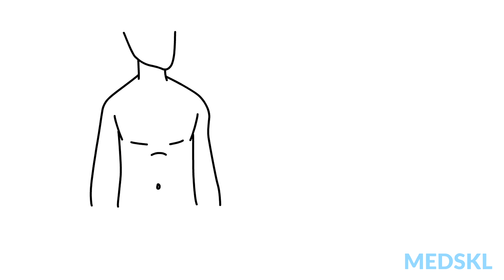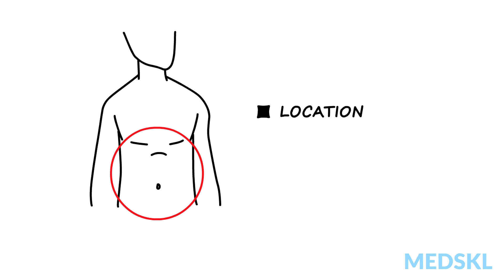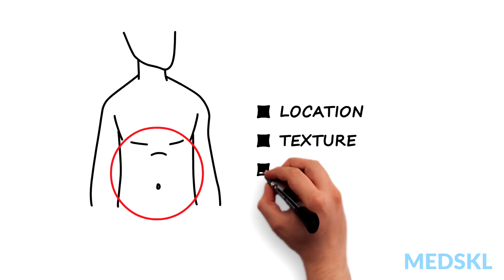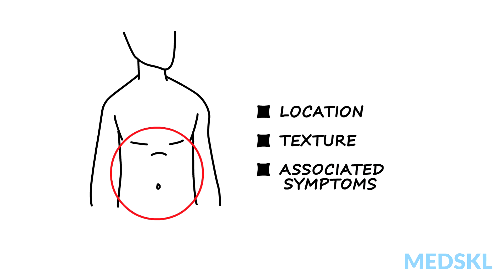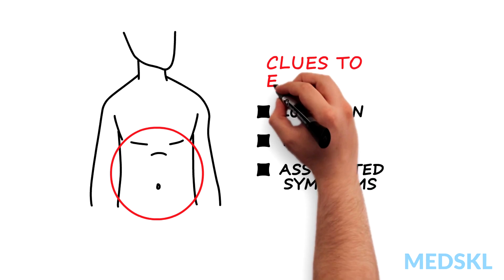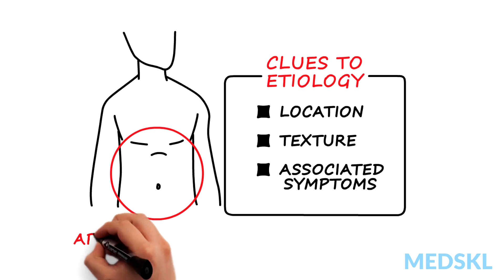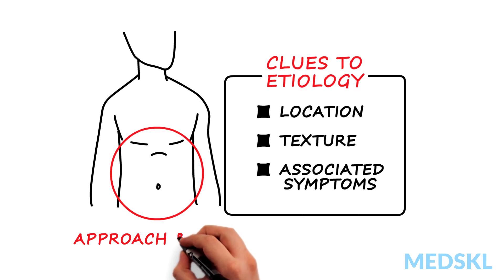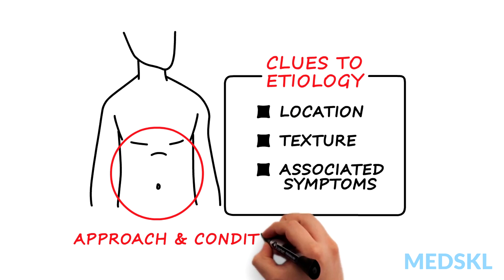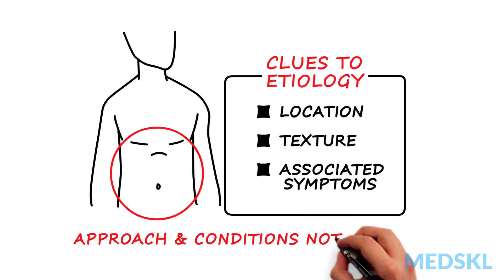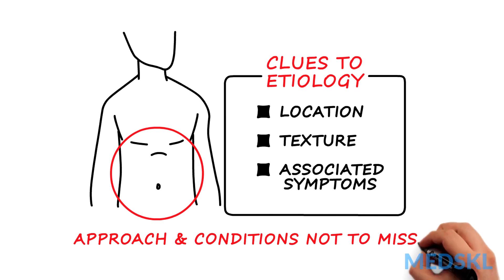Abdominal masses manifest as swellings in a specific area of the abdomen. The location, texture, and associated symptoms can provide clues to etiology. Here's an approach to a patient with an abdominal mass and some conditions that you cannot afford to miss.